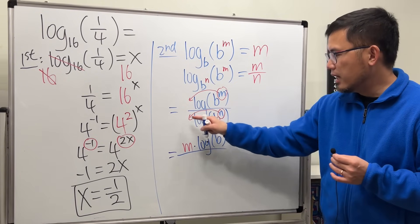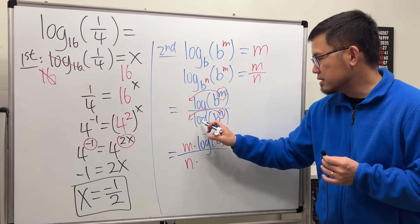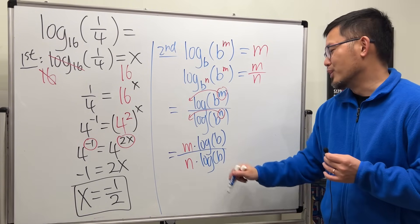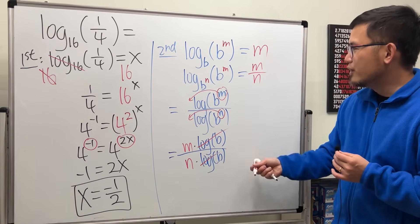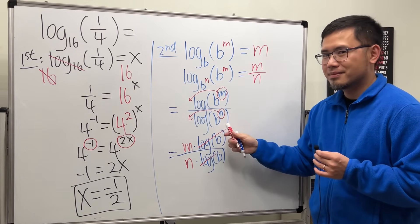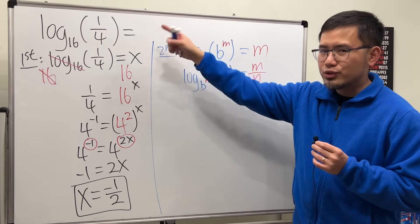And then you know it, this and that cancel. Therefore this right here is indeed equal to m over n. And now let's go ahead and do that question one more time.